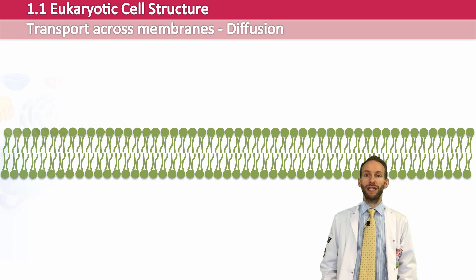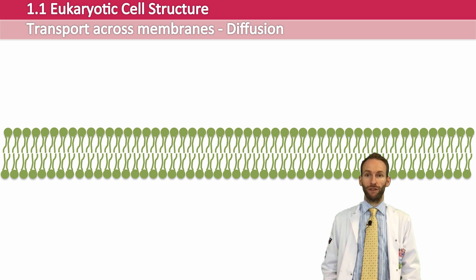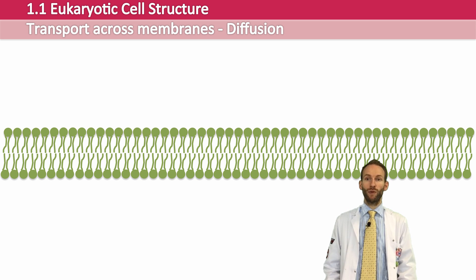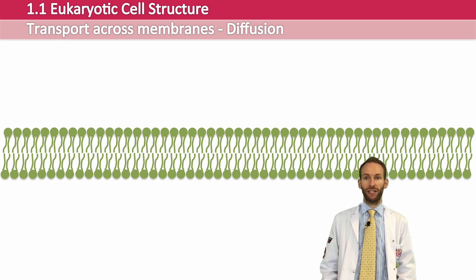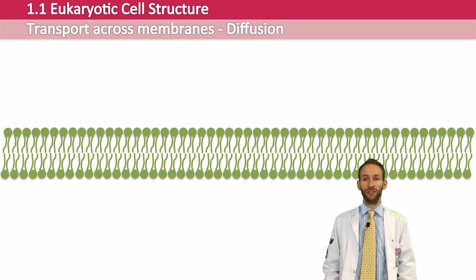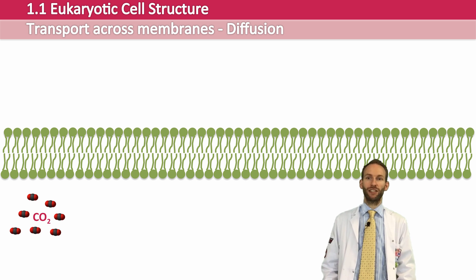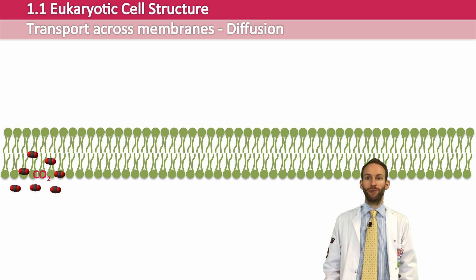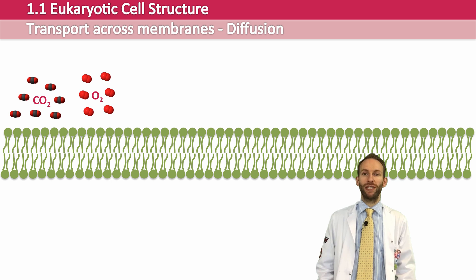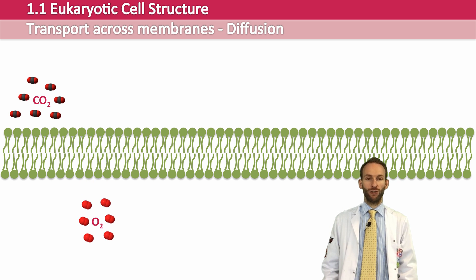Now because of the properties of the phospholipid bilayer, certain molecules can cross in between the phospholipids by diffusion from one side of the cell membrane to the other, and some molecules can't. Small uncharged molecules, things like gases, things like carbon dioxide and oxygen, these tend to be able to pass through between the phospholipids by diffusion.